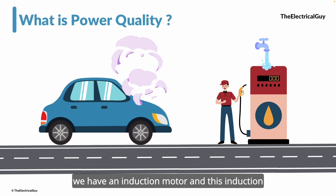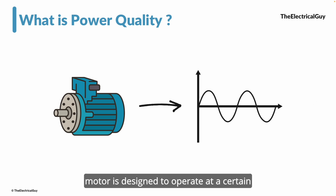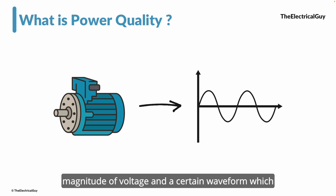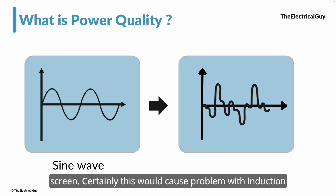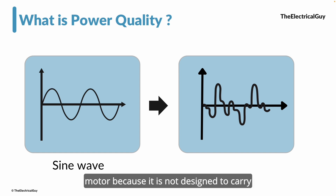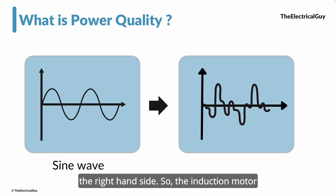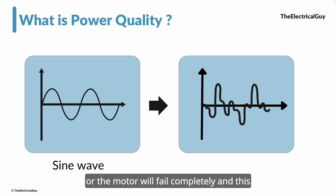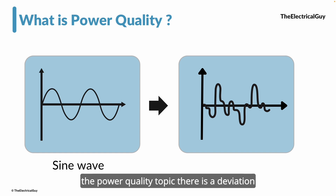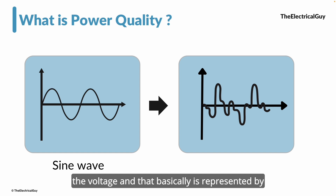The same thing applies to electrical equipment. An induction motor is designed to operate at a certain magnitude of voltage and a sinusoidal waveform. But if instead of a sine wave you supply a voltage that is not sinusoidal — as you can see on screen — this causes problems with the induction motor. It will start malfunctioning, there will be heating issues, or the motor will fail completely. This is what we refer to as the power quality topic.